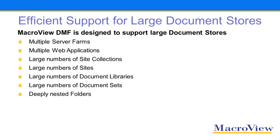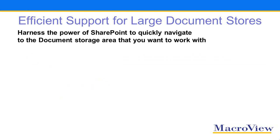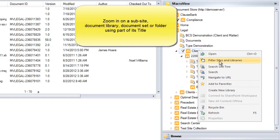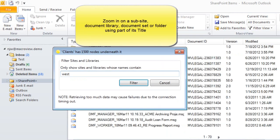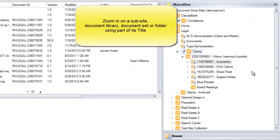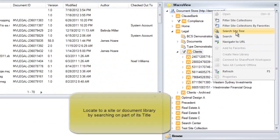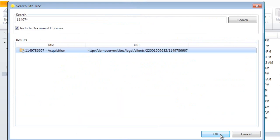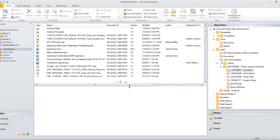MacroView DMF is designed to provide efficient support for large SharePoint document stores and to harness the power of SharePoint to enable you to navigate across a large document store. In this example, we see how you can filter a large number of client sub-sites to zoom in on the site you wish to work with, or use an index search to locate a particular document library using part of its title.